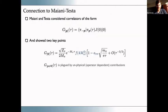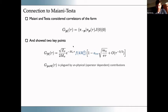I'm a little low on time so I won't give the full story on the Maiani-Testa connection. I want to briefly mention it and then turn to a discussion of volume effects. One question that came up when I presented this work was: isn't this invalidated by Maiani-Testa? There is a famous result by those authors showing we can't get scattering information from Euclidean correlators.